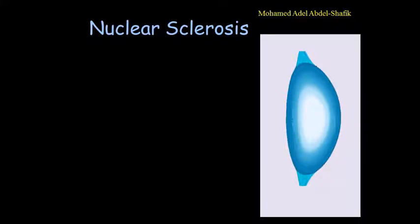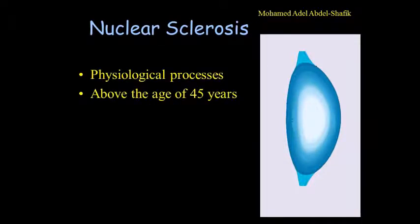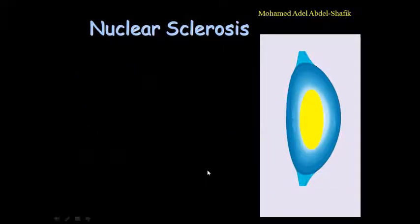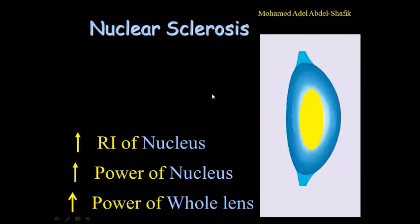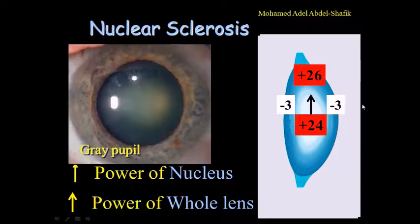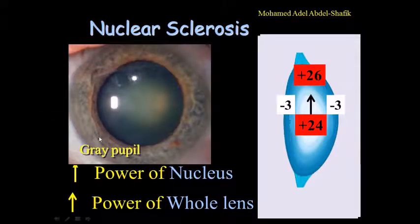Nuclear sclerosis is another example. It's a physiological process that occurs above the age of 45 in which the fibers in the nucleus will start to lose water, become sclerotic. This will be associated with increase in the refractive index. Increasing the refractive index of the nucleus will result in increase of the power of the nucleus. So the total power of the lens will be more. The 24 will be 26, so the whole lens will be 20 plus instead of 18. Nuclear sclerosis will result also in a gray pupil.